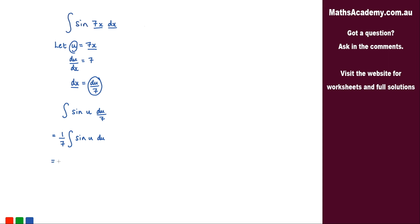So we'll have negative 1 over 7 cosine of u, but we know that u here is 7x. Let's substitute that back in. So we get negative 1 over 7 cosine of 7x, and then just add on the constant of integration.